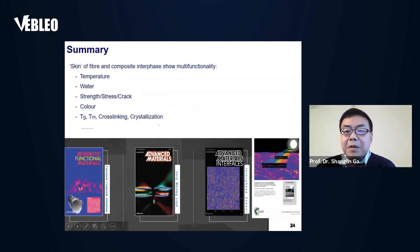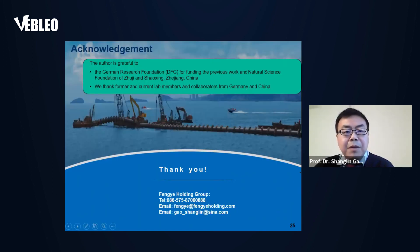So as a summary of this talk, we say that the skin of the fiber and the composite interface show multifunctionality related to temperature, water, strain, cracks, and color, even the processing of glass transition temperature, melting temperature, and of course the crystallization and whatever.